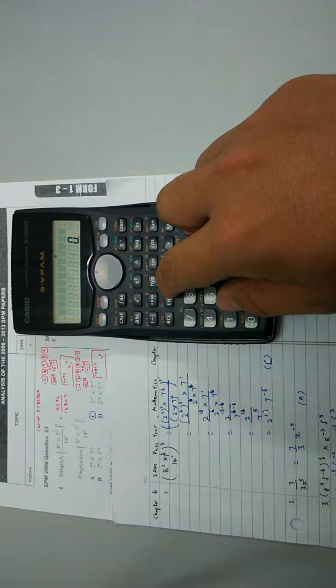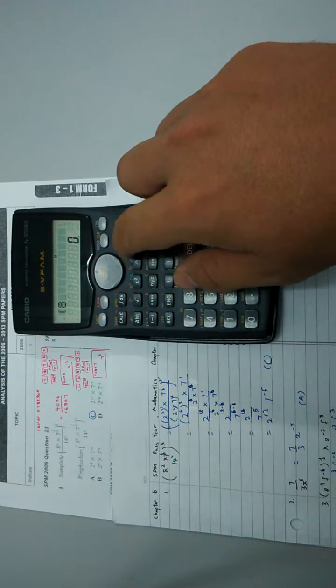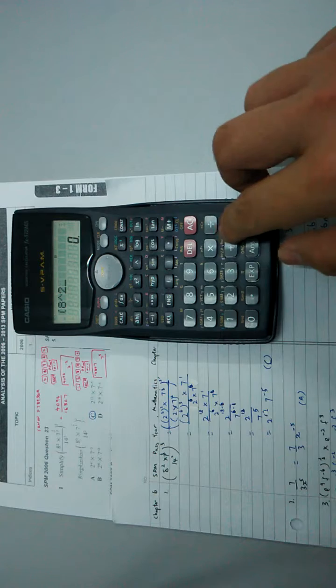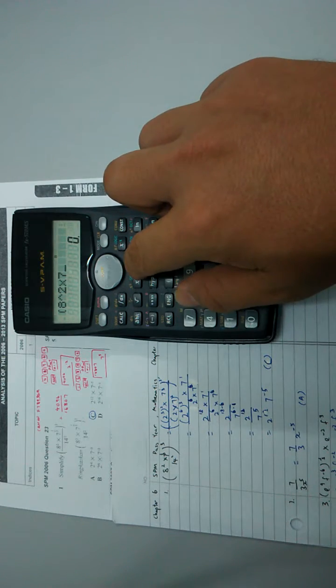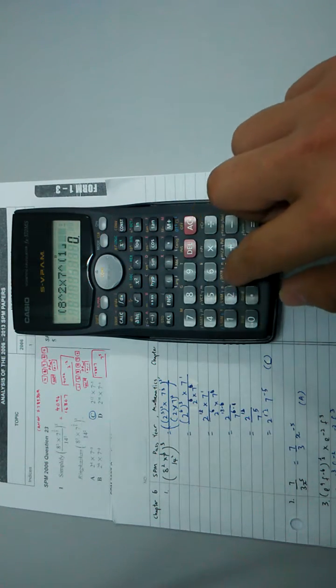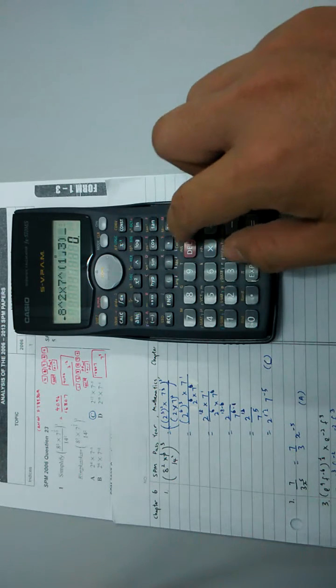So I key in the question: 8 squared multiplied with 7 to the power of 1 over 3, and then